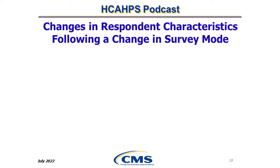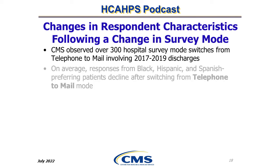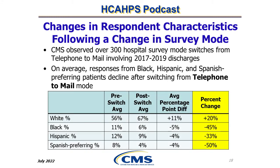CMS observed over 300 hospital survey mode switches from telephone-only to mail-only involving discharges from 2017 through 2019. On average, responses from Black, Hispanic, and Spanish-preferring patients declined after switching from phone-to-mail mode. When a hospital switched from phone-only to mail-only mode, it lost about half the representation from Black and Spanish-preferring respondents. Similarly, representativeness among Hispanic respondents was reduced by about a third after switching from phone-to-mail mode.